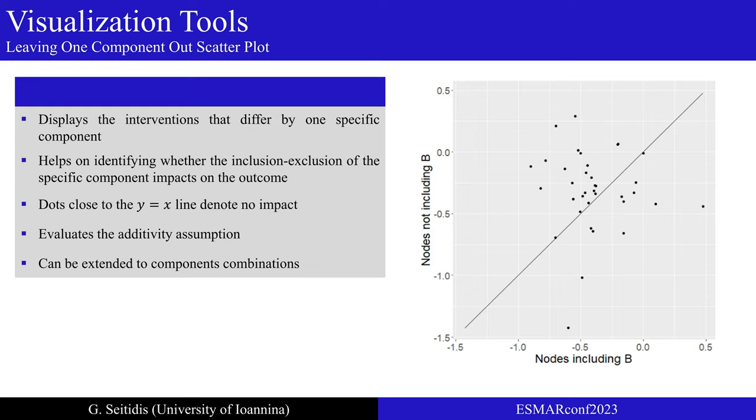Therefore, for beneficial outcomes in which small values are considered as bad values, dots above the line indicate that the inclusion of a component hampers intervention effect, while dots below this line signify a component that decreases efficacy. The opposite holds for harmful outcomes. Another feature of this scatter plot is that we can visually evaluate additivity assumption. Additivity implies that the inclusion or exclusion of a component has the same impact on interventions that differ by one specific component. This is expressed in the scatter plot by a line parallel to the line of equality. In our example, we do not observe any parallel line, which indicates that additivity assumption in CNMA may not hold.